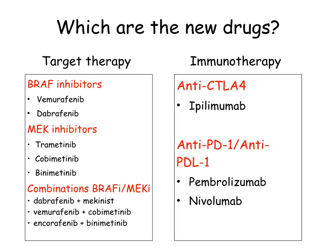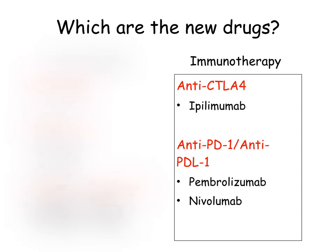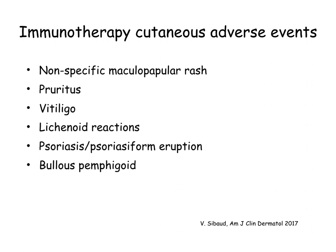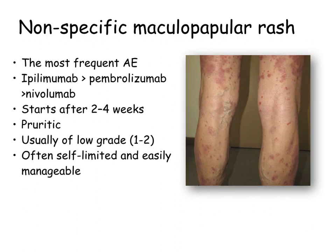Regarding the immune checkpoint inhibitors, cutaneous reactions appear as the most prevalent, and it seems that their occurrence may be correlated with a better therapeutic response. Here is the list of the most common skin toxicities associated with immunotherapy. The maculopapular rash starts after two to four weeks; it is highly pruritic, but usually self-limited and easily manageable.